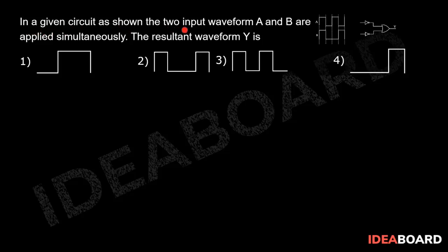In a given circuit as shown, the two input waveforms A and B are applied simultaneously. The resultant waveform Y is... So in this circuit, let us first try to write its truth table and then we will solve the question.